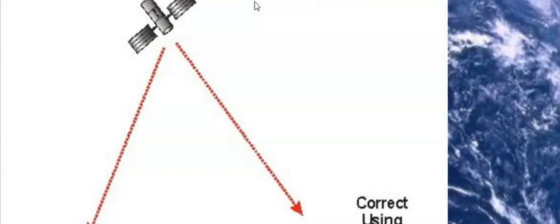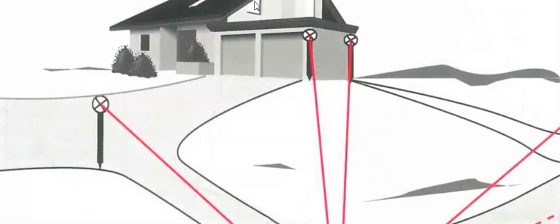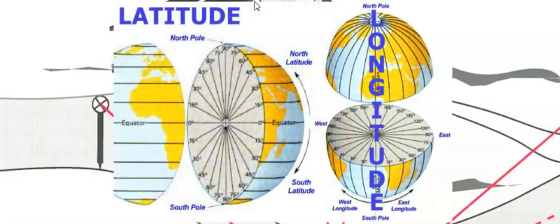Most surveying instruments store points, positions, and locations in degrees, minutes, and seconds. And most surveyors usually work with degrees, minutes, and seconds more than decimal degrees.